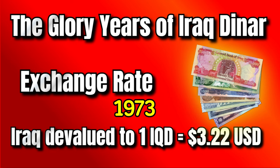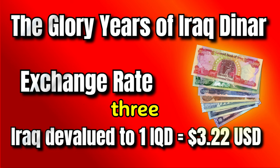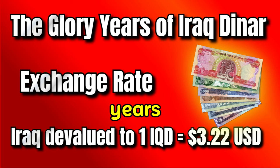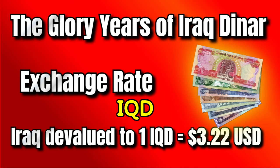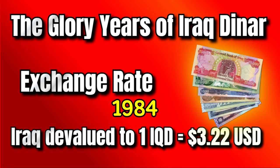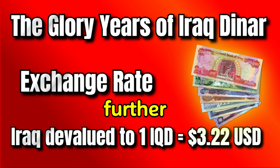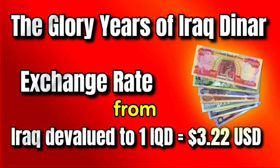In 1973, after the U.S. abolished the gold standard, Iraq maintained a $3.39 rate for a couple of years. In 1982, Iraq devalued to 1 IQD equals 3 U.S. dollars and 22 cents. From 1984 to 1987, several further devaluations occurred during the Iran-Iraq war, with the rate dropping from $3.22 to around $3 per IQD.